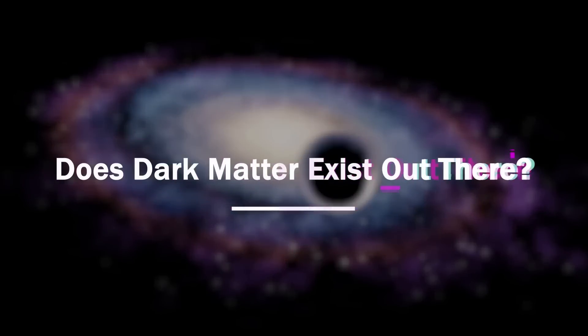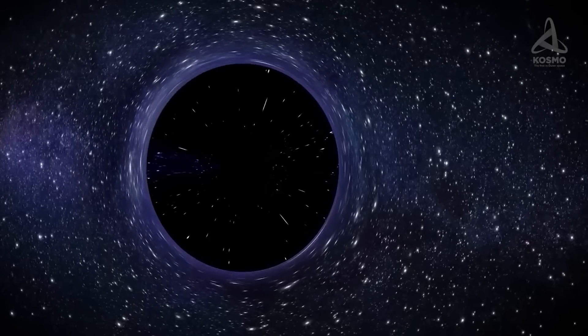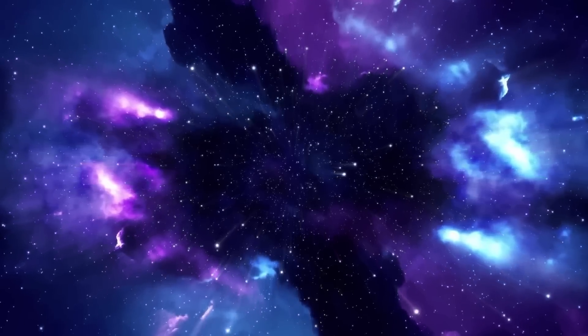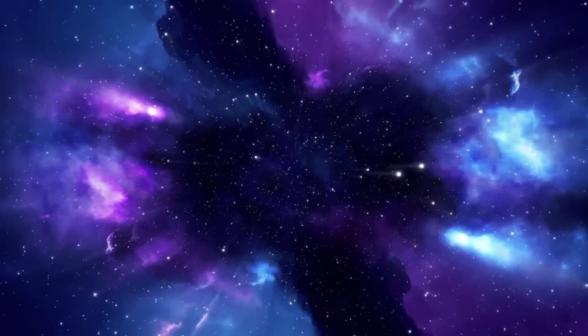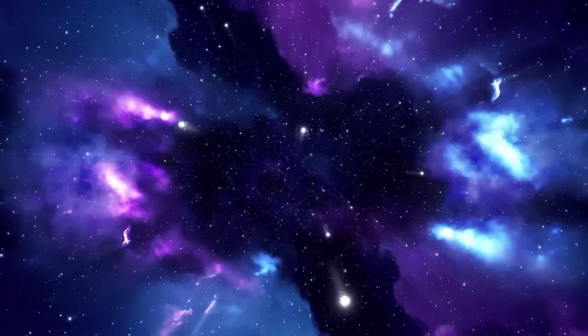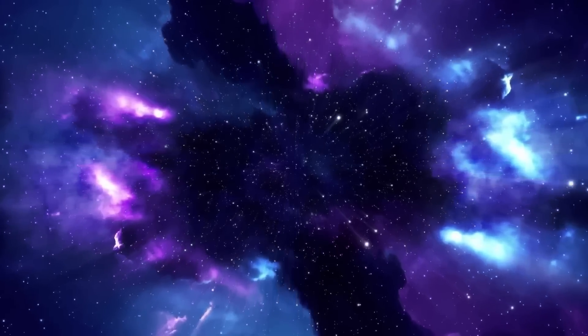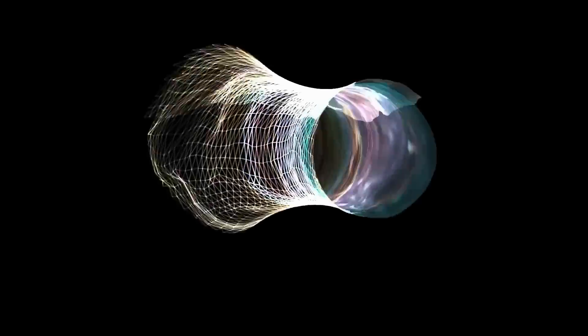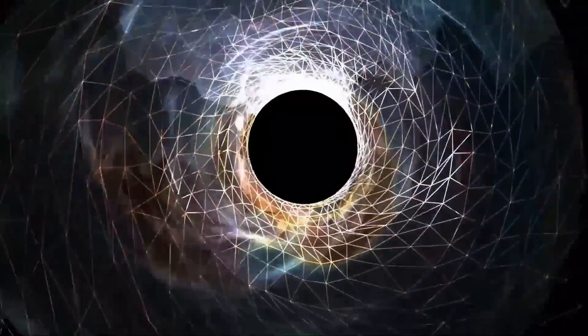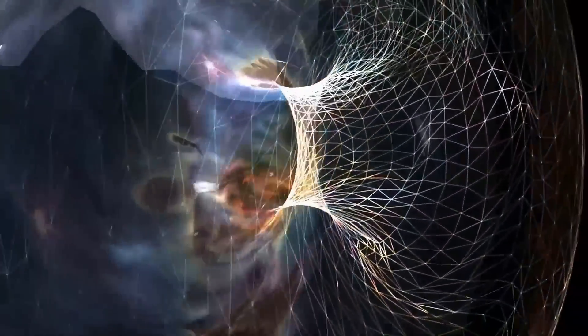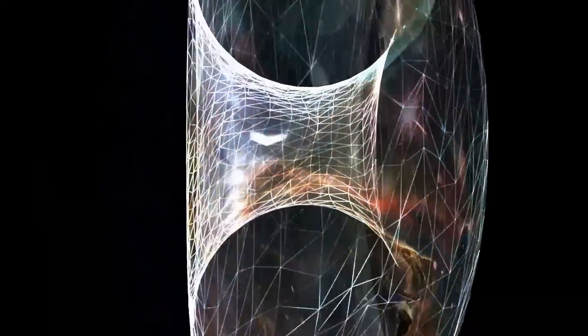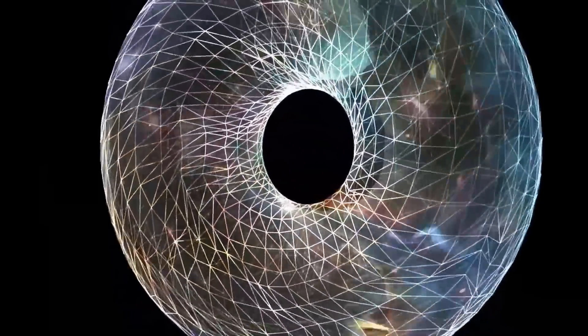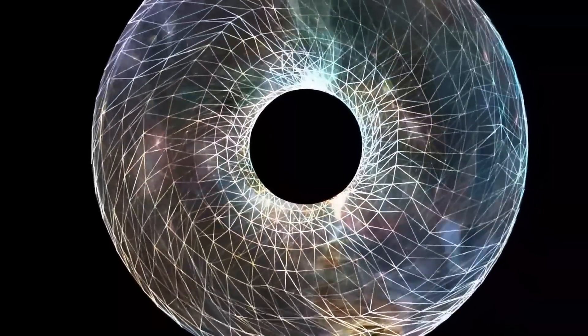Does dark matter exist out there? Now, this is one term you must have heard of before as well. Dark matter is a hypothetical form of matter that is thought to make up approximately 85% of matter in the universe. But why is it called dark? Dark matter is called dark because it does not interact with light in the same way that normal matter does, and therefore it is difficult to detect directly using telescopes or other instruments that rely on the detection of light.